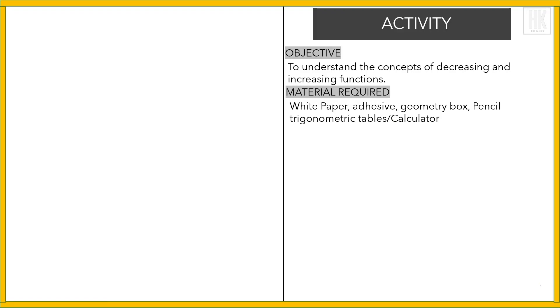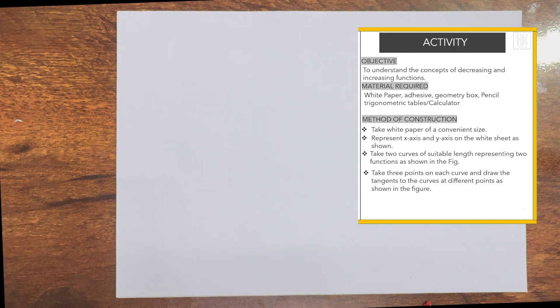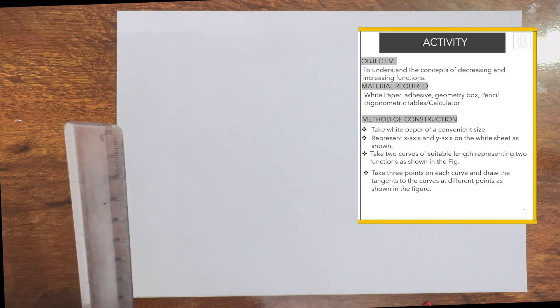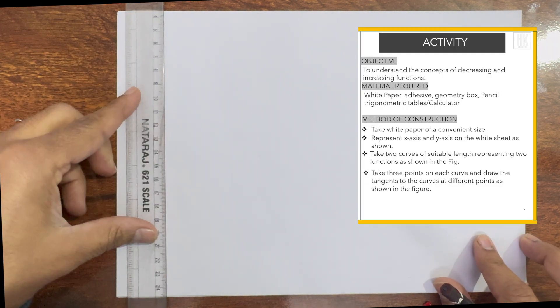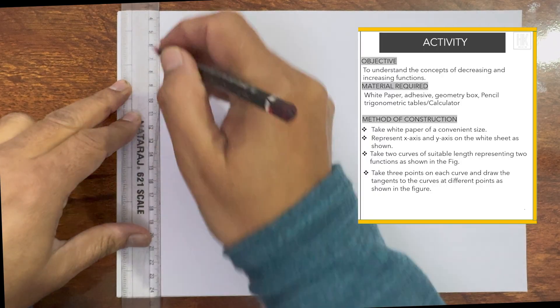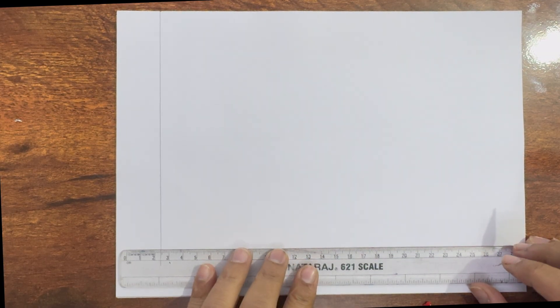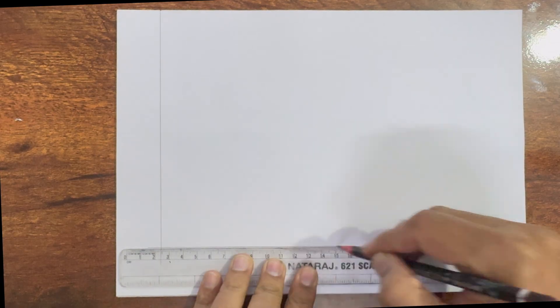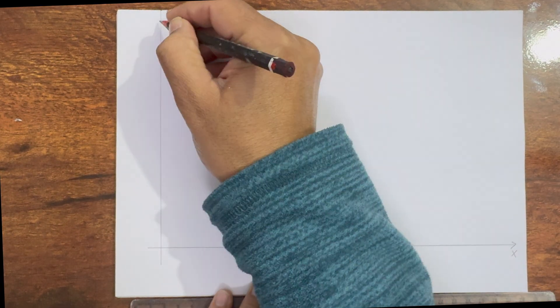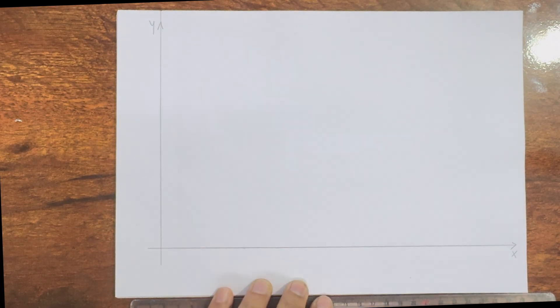a trigonometric table, and a calculator. To understand the concept of decreasing and increasing functions, take a white paper of a convenient size and represent the x-axis and y-axis. Assume the figure — this is the x-axis and this is the y-axis.